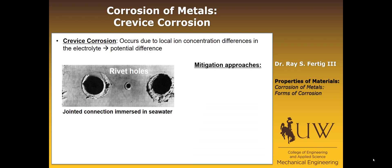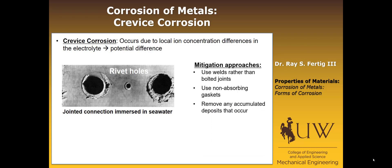Because of that concentration difference, there was a potential difference, and anytime you have a potential difference you're going to induce corrosion. Some mitigation approaches: use welds rather than bolted joints so you don't have small regions where electrolyte concentrations can differ. Use non-absorbing gaskets so the gasket doesn't cause a concentration difference between the bulk and the local crevice region. And remove any accumulated deposits, since impurities can also lead to local ion concentration differences.